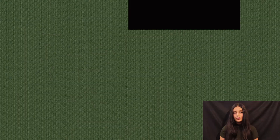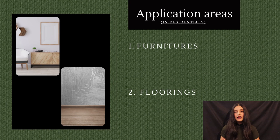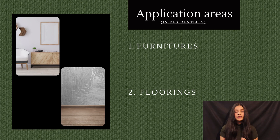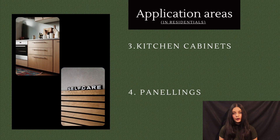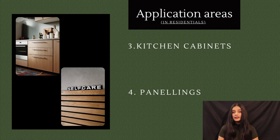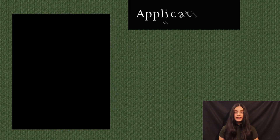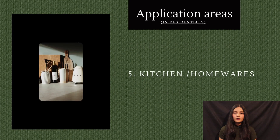Now let's talk about application areas. In residential areas, the main use is furniture, which looks very good. Second is flooring — the medium brown color is very suitable and enhances the space. Third, cabinets are used in the kitchen because it is moisture resistant. Fourth is wall paneling, which looks beautiful in a light color. And last, it is used for kitchenwares and homewares as well.